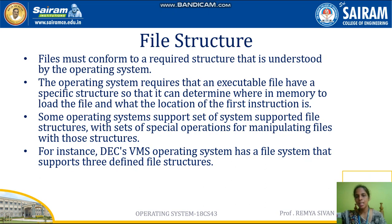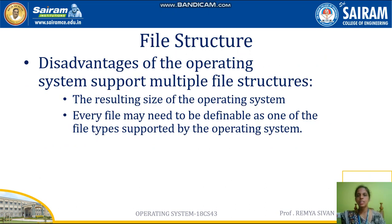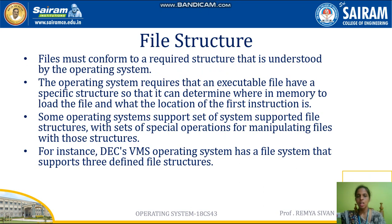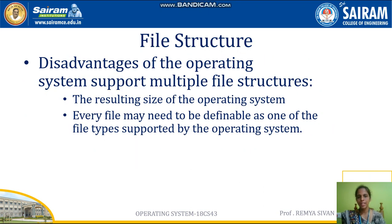Each file should conform to the required structure. Some operating systems support a set of system-supported file structures with special operations for manipulating files with those structures. For example, the VMS operating system has a file system that supports three defined file structures. However, when an operating system supports multiple file structures, the resulting size of the operating system becomes a problem, because for each file structure the required code must also be included.